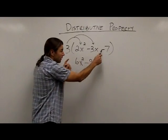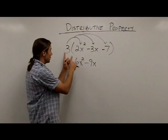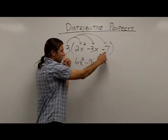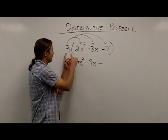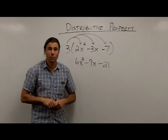Now I need to take that 3 times the last term, which is negative 7. Notice again, a positive times a negative, so I'm going to get a negative result. And 3 times 7 gives me 21. That's the distributive property.